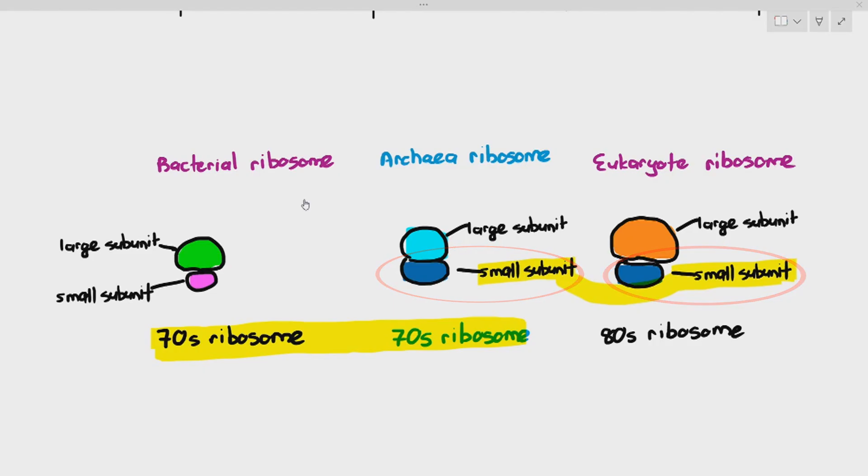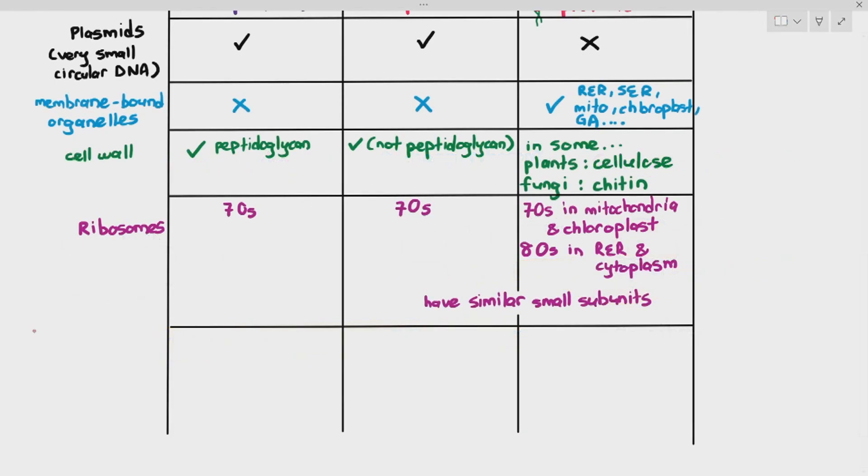So for the exam, all you just have to mention is bacteria have 70S ribosomes, archaea have 70S ribosomes, eukarya, they have 70S ribosomes in mitochondria and chloroplasts. Yes, we know that. They have 80S ribosomes in their rough ER and cytoplasm. And the 70S ribosomes of the archaea have similar small subunits with the 80S ribosomes of the eukaryotes. Just know that the small subunits have more similarities.